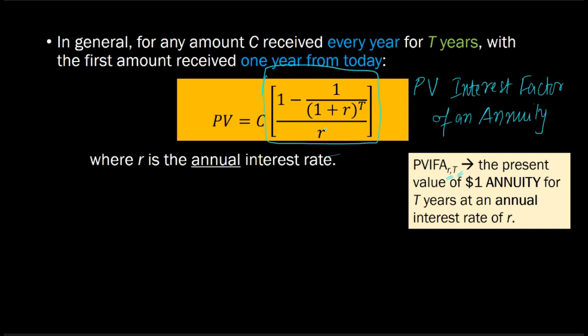What is this expression capturing? It's basically capturing the present value of a $1 annuity that lasts for T years when the annual interest rate is R.